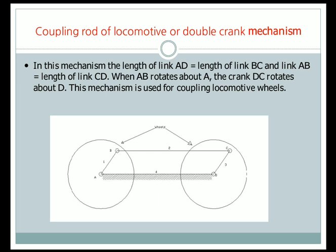The next type of inversion is the coupling rod of a locomotive or double crank mechanism. Here you can see that there are four links: link 4 is fixed and links 1, 2, and 3 are movable. There are two wheels — one at the left end connected to link 1, and one at the right end connected to link 3. The left wheel and link 1 are the same single link, as are the right side wheel and link 3.